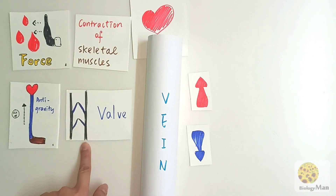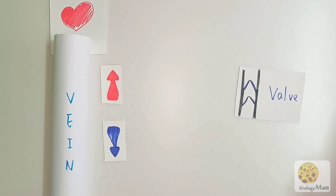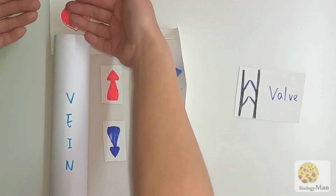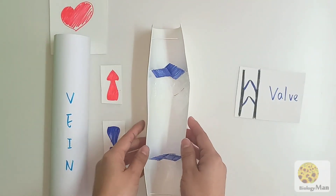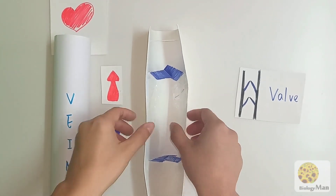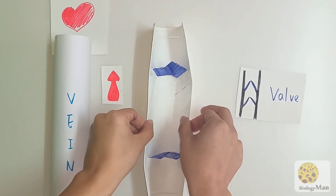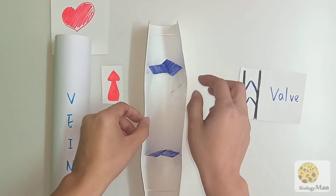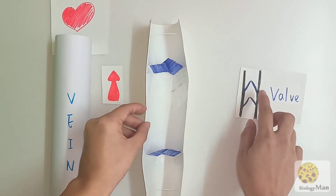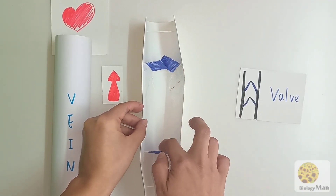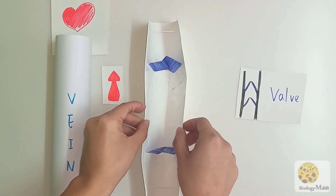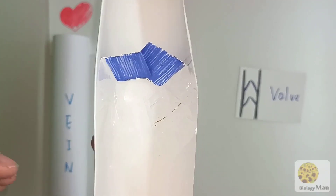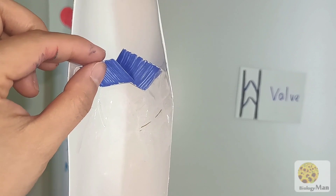You always see this diagram in textbooks, but what actually are valves? If I cut the vein this way, it provides a longitudinal section of the vein. Here is the wall, and this is the lumen of the vein. You can see the valves here — the blue structures are the valves.